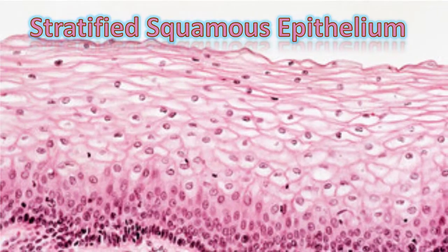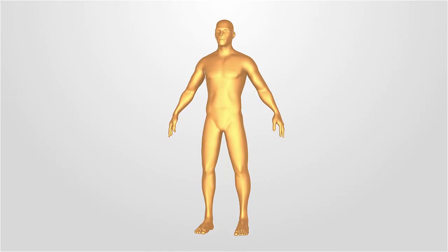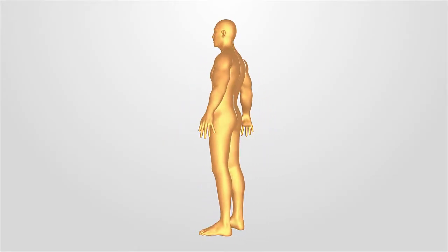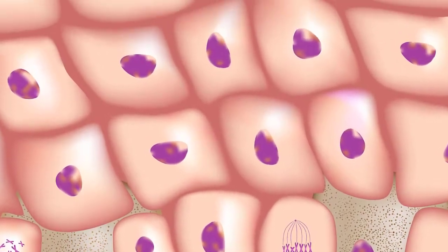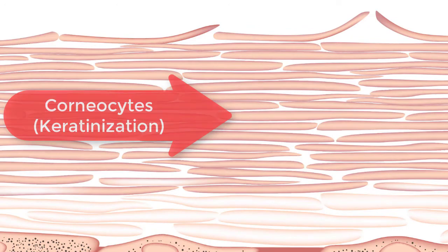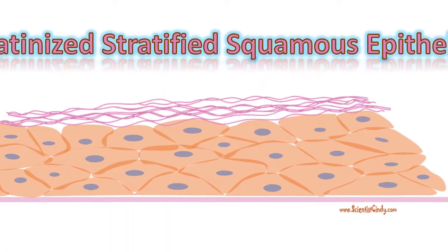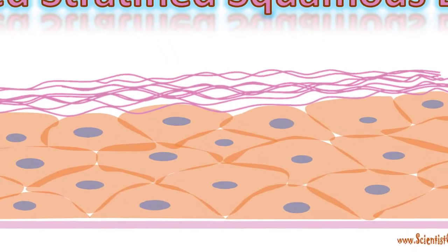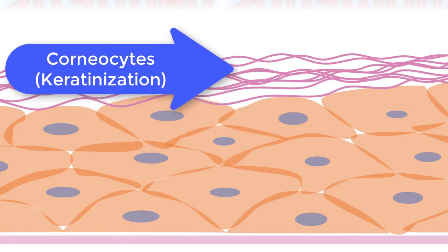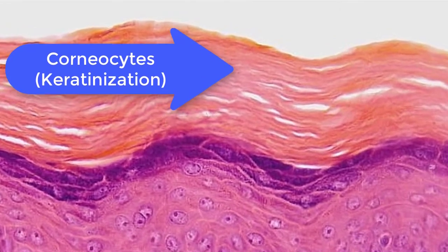This slide shows the non-keratinized stratified squamous epithelium of the tongue. The stratified squamous epithelium that lines the outer surfaces of the body is characterized by dead skin cells that cover the surface and provide added protection. This keratinized stratified squamous epithelium is composed of numerous layers of dead squamous skin cells called corneocytes, and is found on the outer portions of the body.